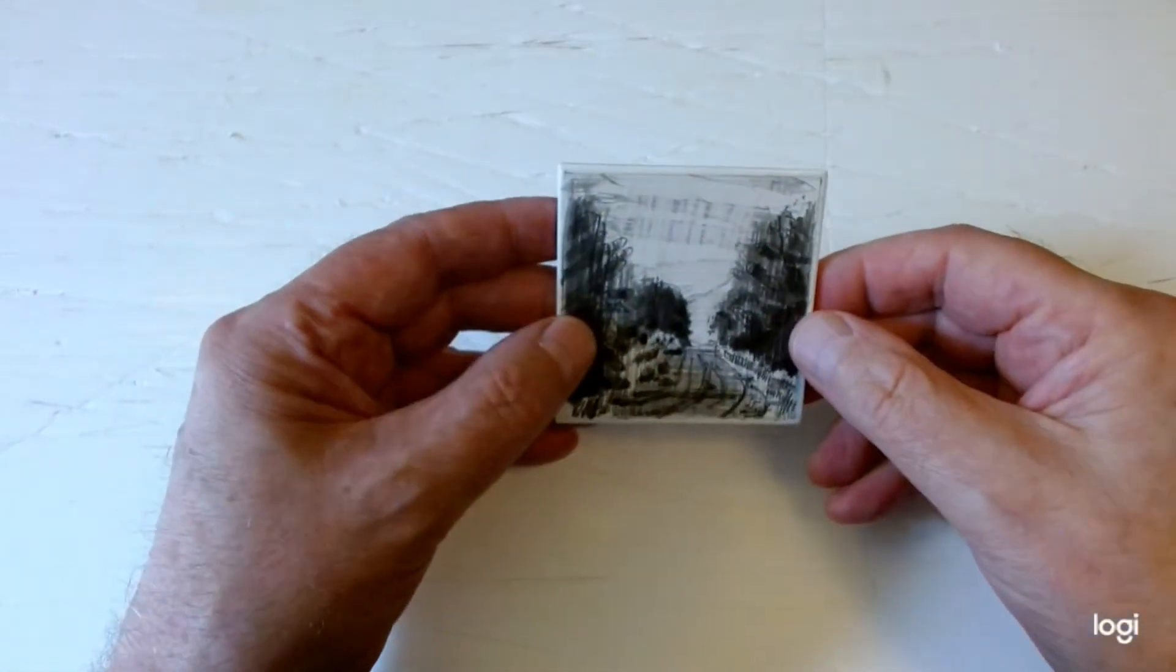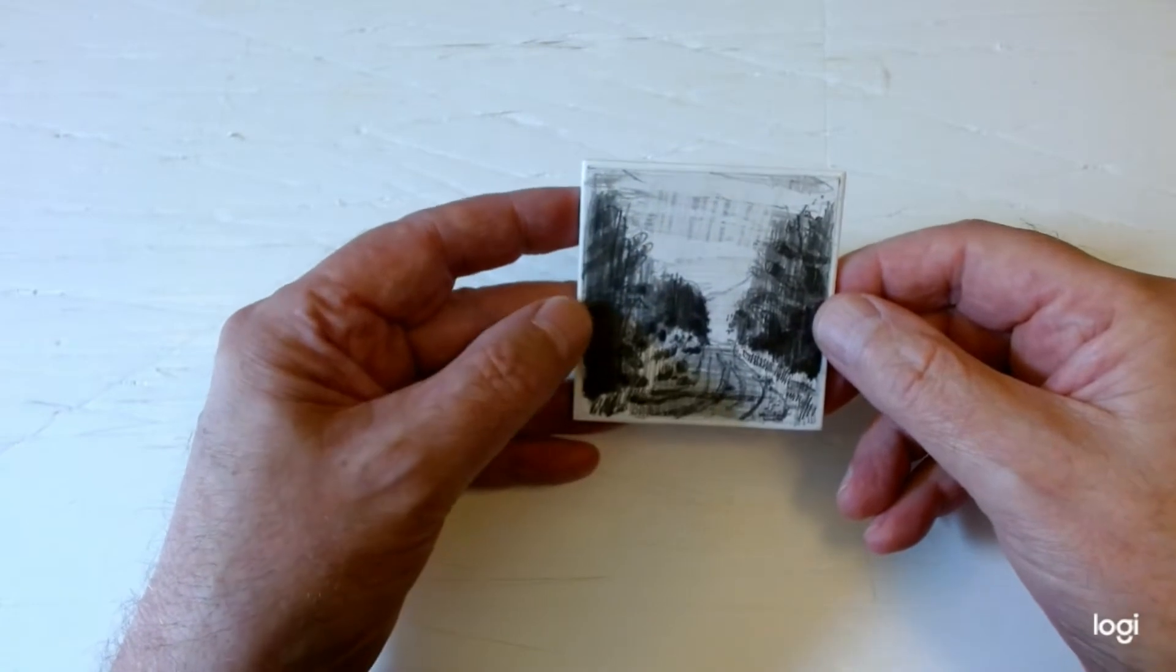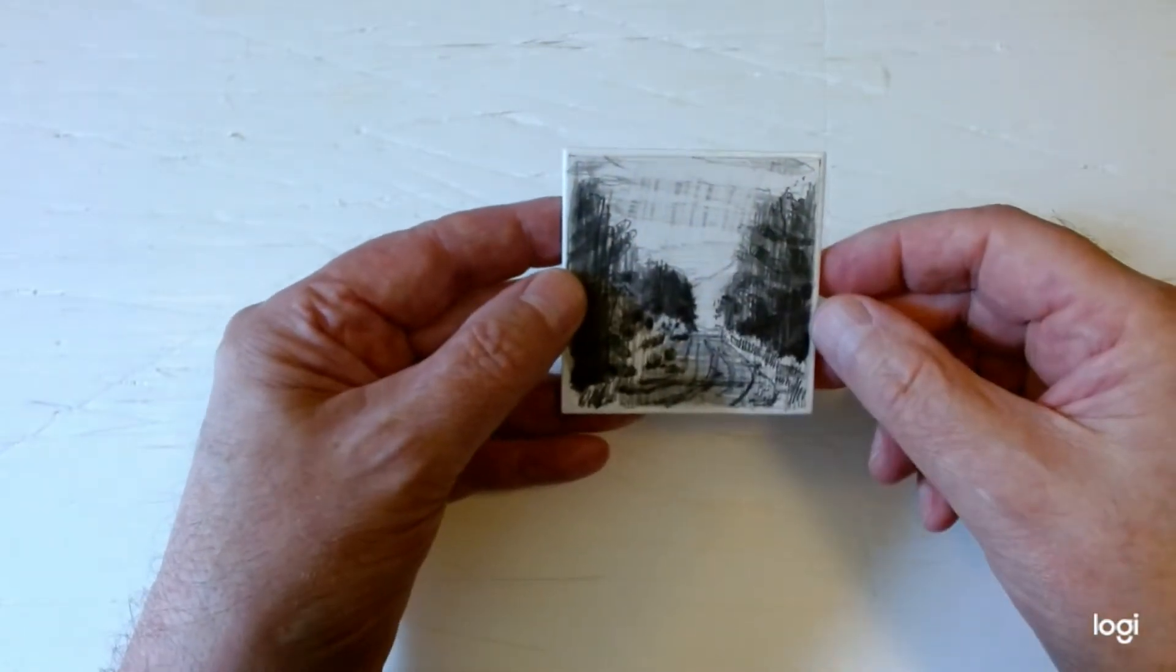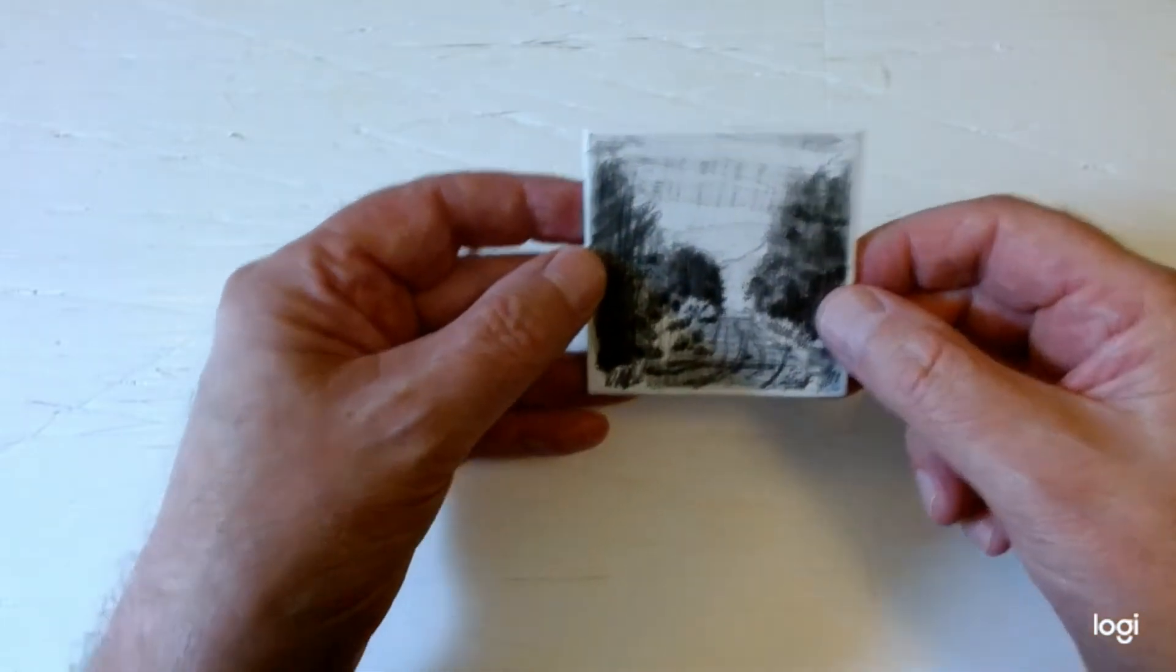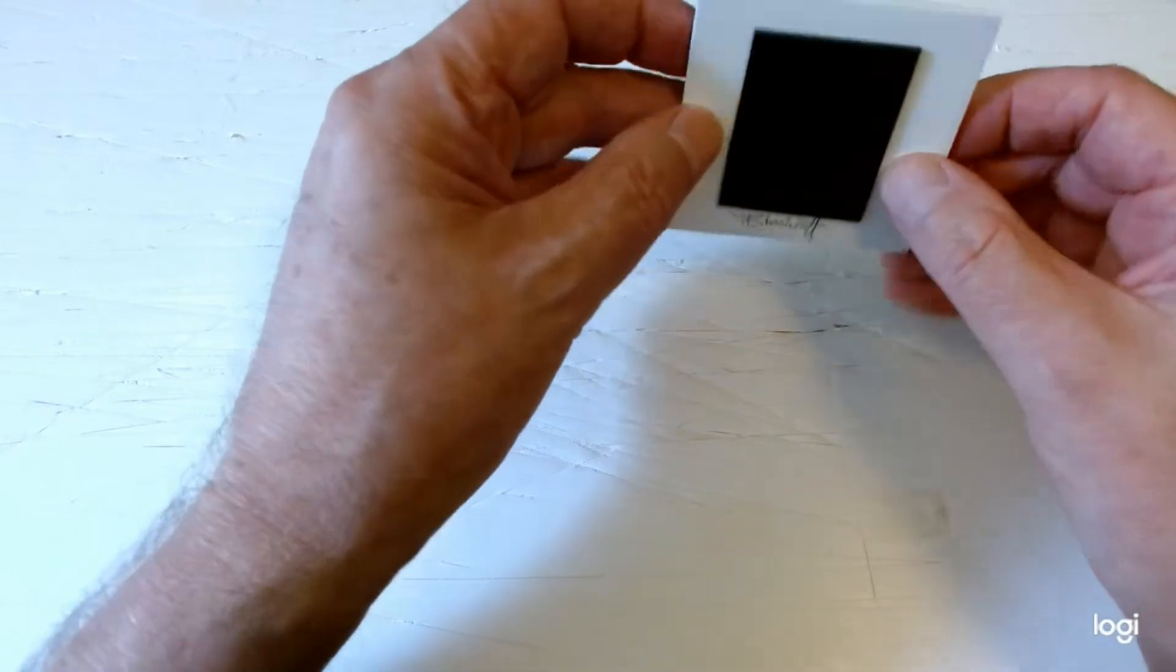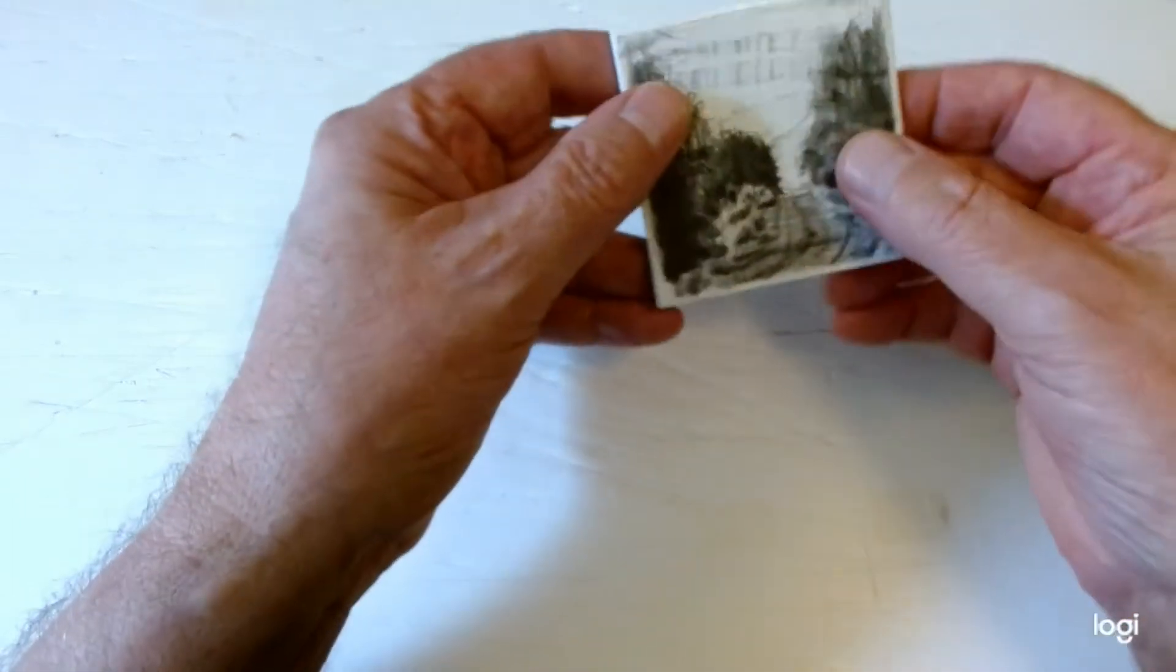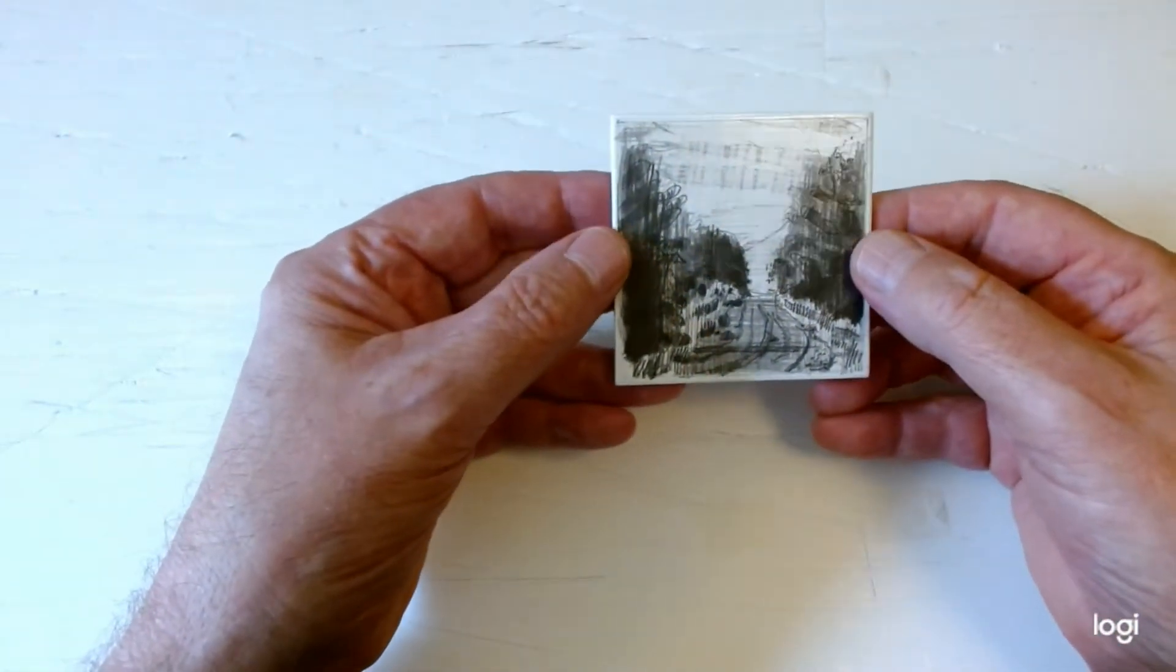They're on thin acid-free sketching paper and then they're lightly fixed so they won't smudge. Light layer of archival fixative. Then they're trimmed. And you haven't seen how this panel has been prepared completely. When this panel is completely prepared, they let them sit for a day or two to cure.